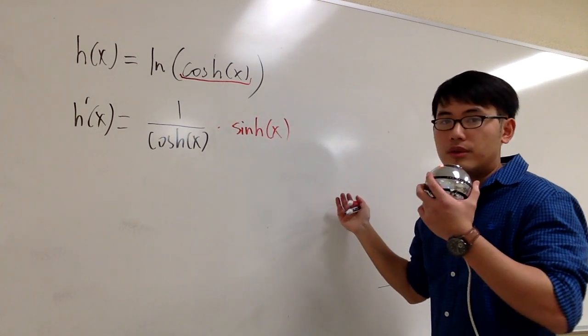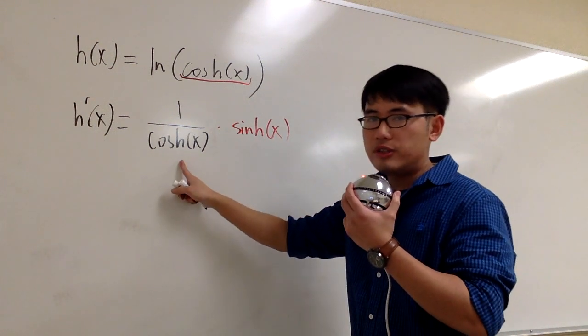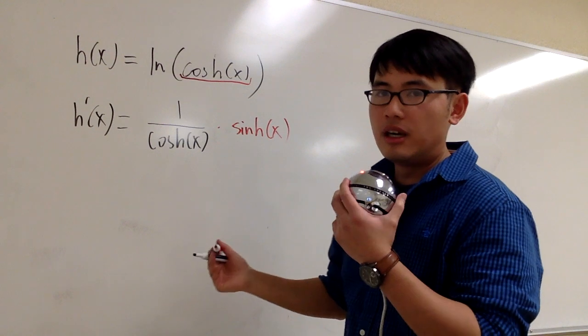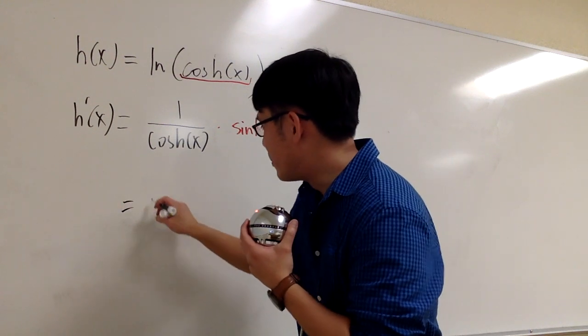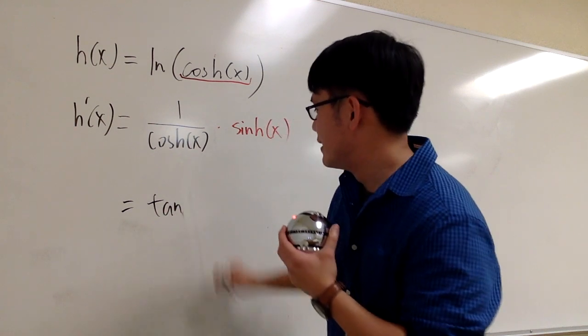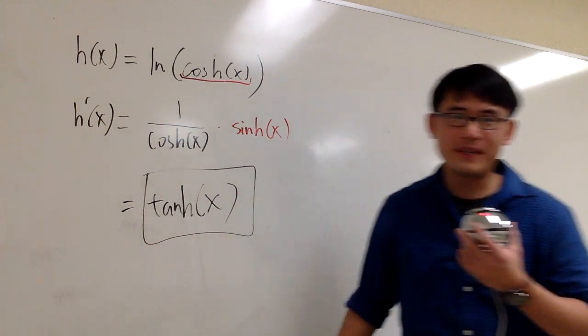And that's all we need to do. You see you have sinh on the top over cosh on the bottom. And together, we can say that to be tanh(x), hyperbolic tangent x. And that's it.